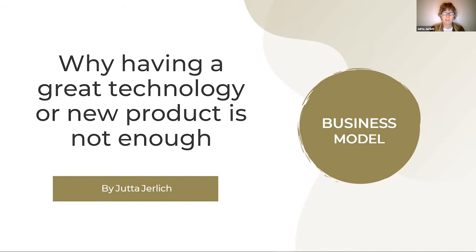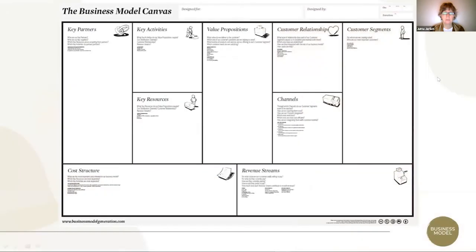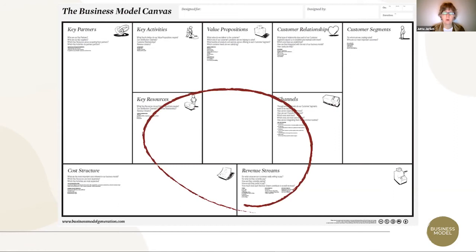Hello, we have reached the stop on business model and we are talking today about why having a great technology or new product is not enough anymore. Here is our orientation map that we have used since the beginning, and we have reached now that core where all the lines, all the pieces of the puzzle are coming together — where you're actually trying to create that engine that is driving your business.